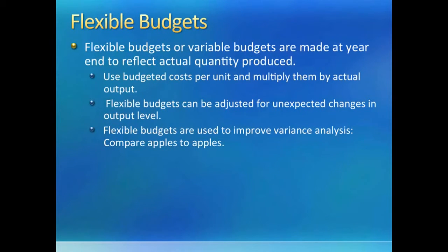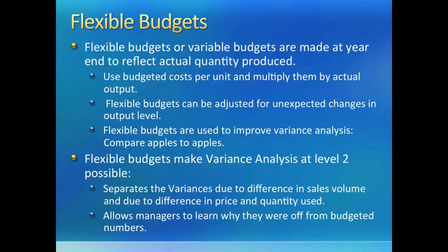Let us revisit the issue of unfairness in comparing a static budget with actual results when units actually produced are hugely different from units budgeted. Comparing a budget made for 5,000 units to actual numbers based on production of 10,000 units would be like comparing apples to oranges. A fair thing to do would be to remake the budget for the actual number of units produced using the same per unit budgeted costs from the static budget, adjusted for actual output. These are called flexible budgets because they can be flexed for any level of activity. Flexible budgets help us separate variances into two portions: one due to the difference in production volume, and the other due to differences in prices and quantities used for actual production.